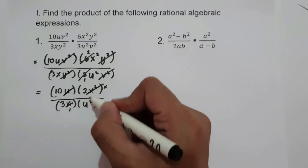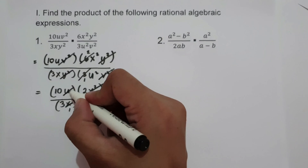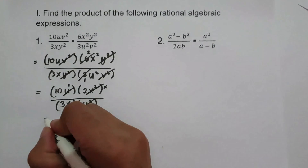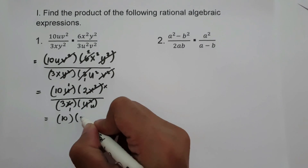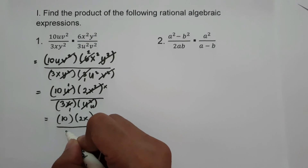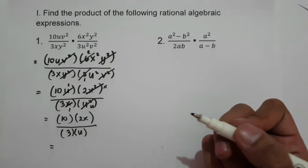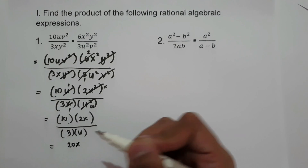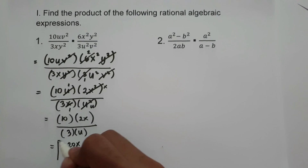Then u and u² — the greatest common factor is u, so u becomes 1 and u² becomes u. Therefore, 10 times 1 times 2 times x over 3 times 1 times u gives us a final answer of 20x over 3u.